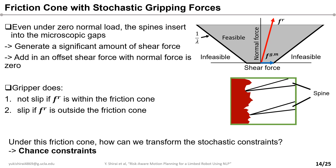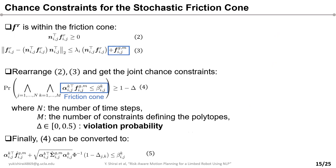To consider the stochastic gripping forces in friction cone constraints, we propose the friction cone as shown on the right side of the slide. In our spine gripper, even under zero normal force, the spines insert into microscopic gaps of the terrain, so that the gripper generates a significant amount of shear force. That's why we add an offset shear force when the normal force is zero to account for the gripping forces. Under this proposed friction cone, the gripper does not slip if F1 is within the friction cone; otherwise, it slips. We utilize chance constraints. Equations 2 and 3 describe our proposed friction cone constraints accounting for gripping forces. Equation 3 has an offset term to account for the gripping forces. We rearrange equations 2 and 3 and get the joint chance constraints in equation 4.